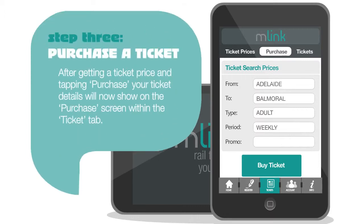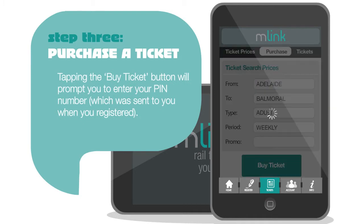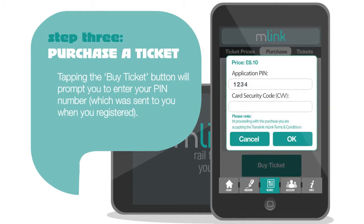Step 3: Purchase a ticket. After getting a ticket price and tapping Purchase, your ticket details will now show on the Purchase screen within the Ticket tab. Tapping the Buy Ticket button will prompt you to enter your PIN number, which was sent to you when you registered.